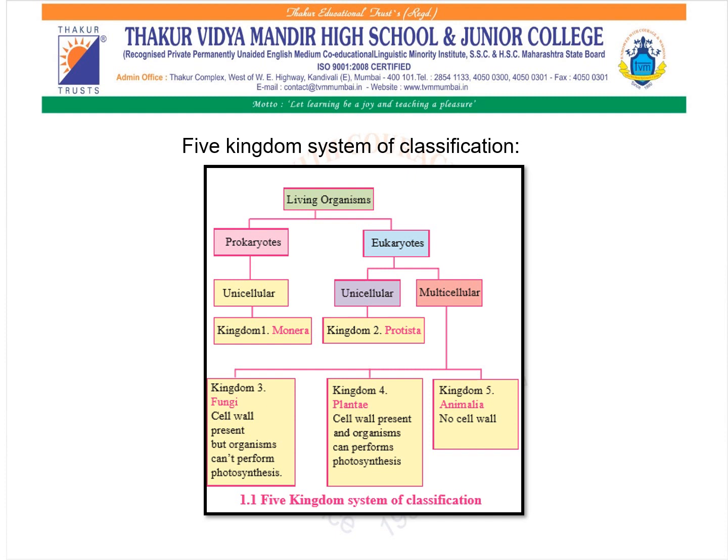To better understand this biological classification of living organisms, you need to know about the Five Kingdom System of Classification. In this system, living organisms are first classified into prokaryotes and eukaryotes. Prokaryotes are basically unicellular in nature, and Kingdom Monera belongs to the prokaryotes. Eukaryotes are unicellular and multicellular in nature. Under the unicellular category comes Kingdom Protista, and under multicellular comes Kingdom Fungi, Kingdom Plantae, and Kingdom Animalia.